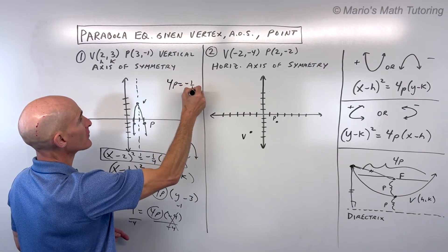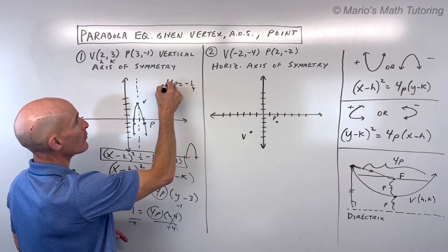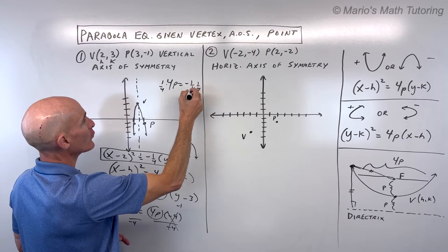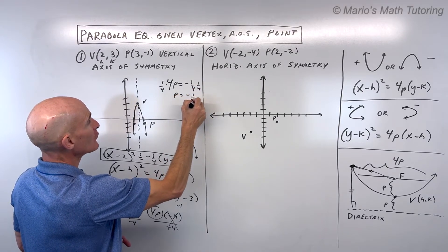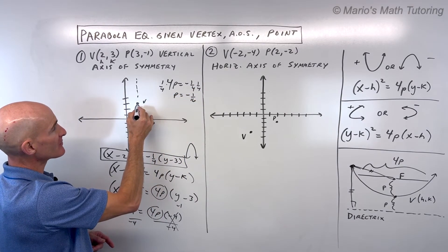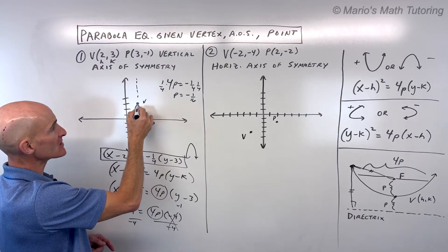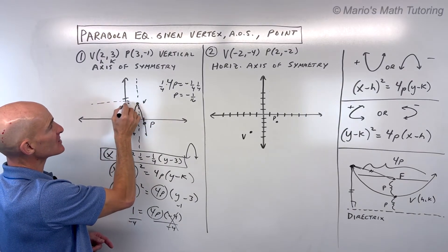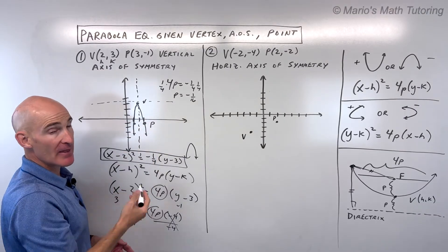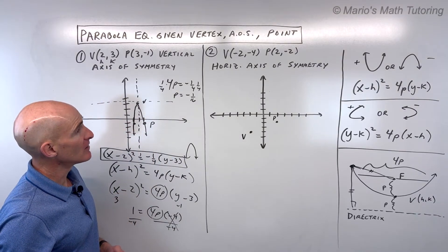Divide both sides by 4 or multiply both sides by the reciprocal, 1 fourth. P equals negative 1 sixteenth. So you go down 1 sixteenth from the vertex, that's your focus. Up 1 sixteenth, that's going to be your directrix. And that's how you can find those key components.